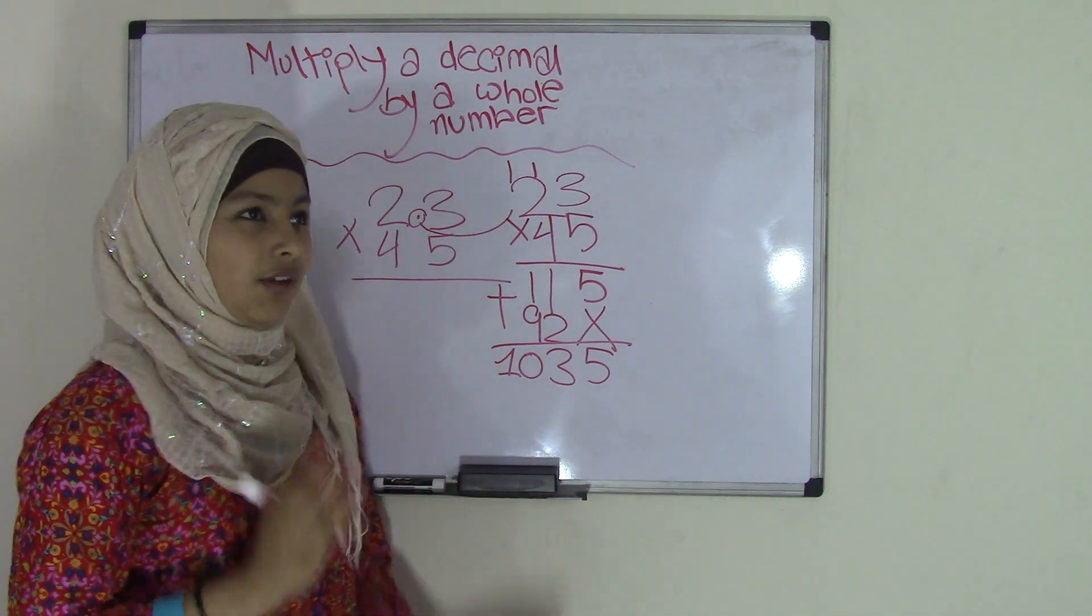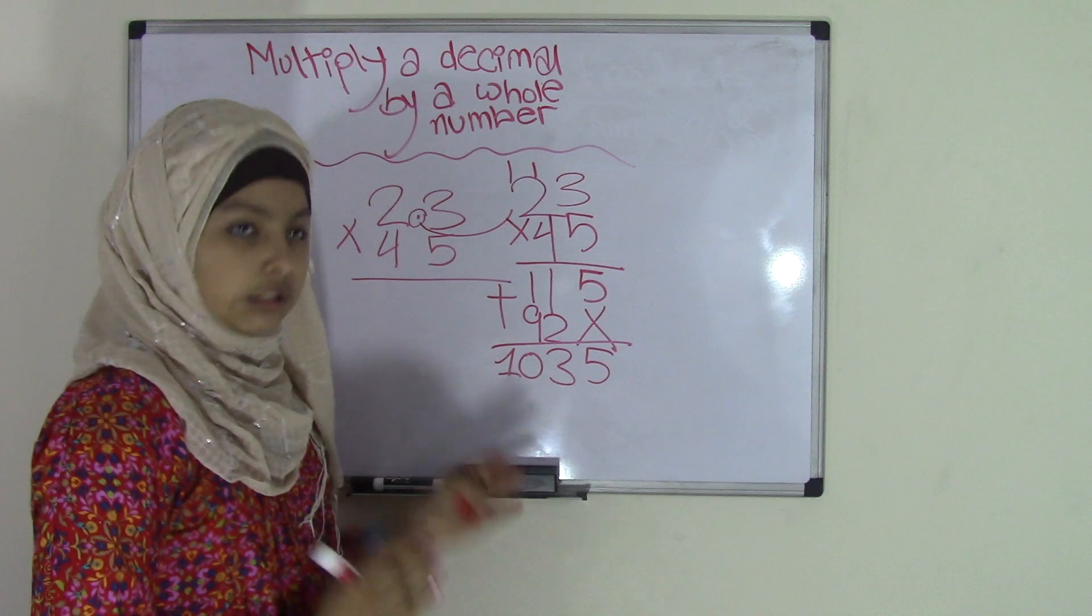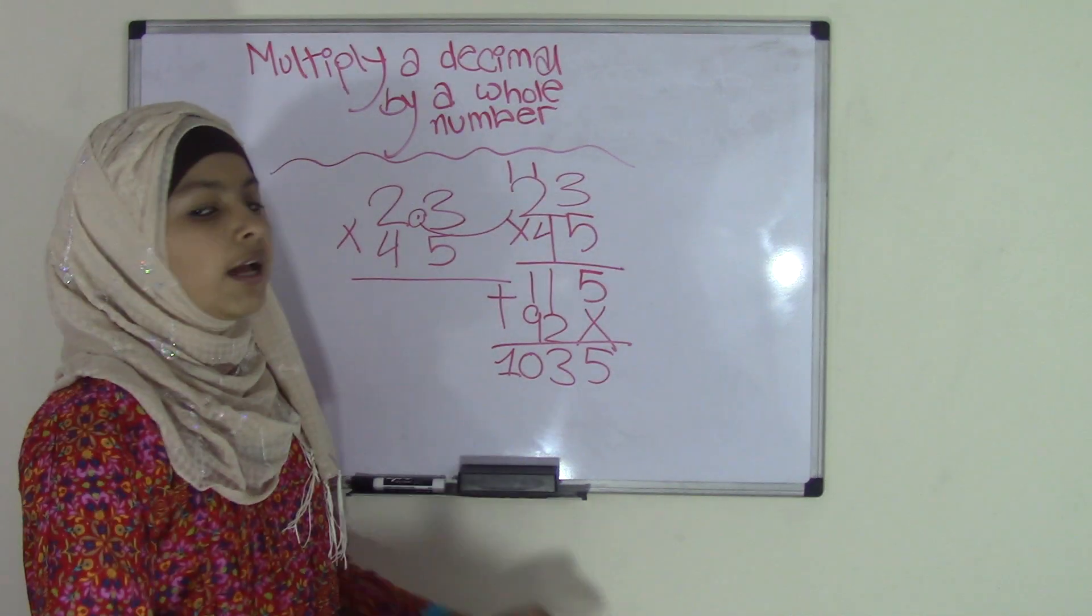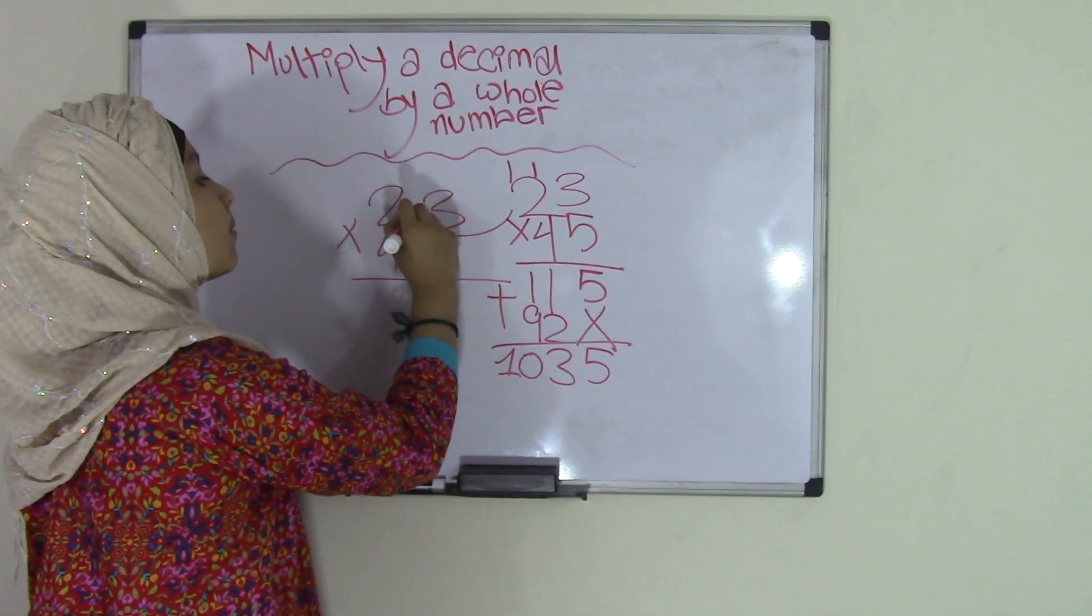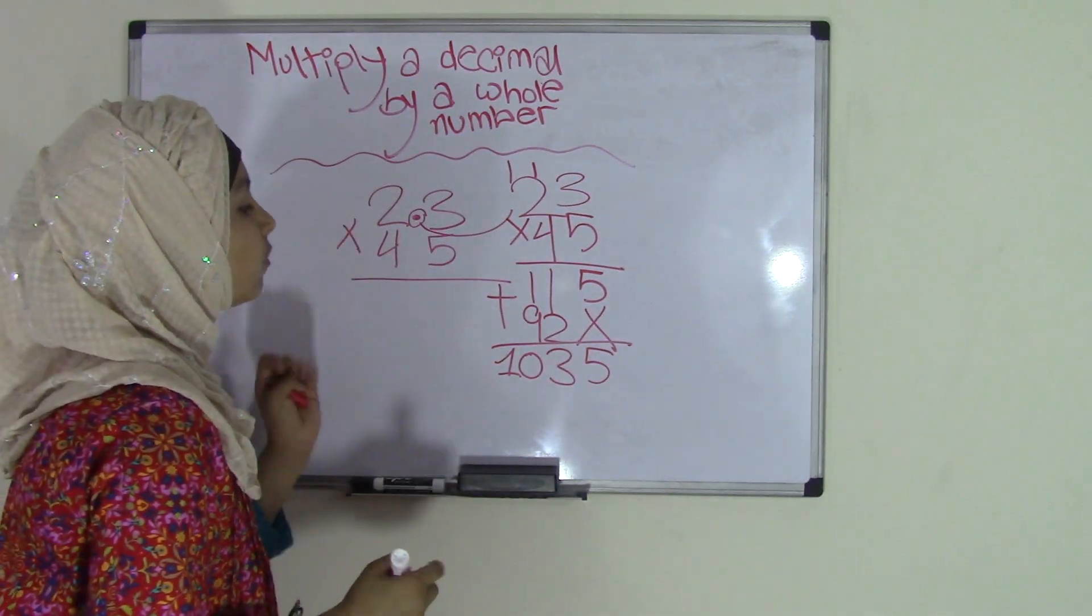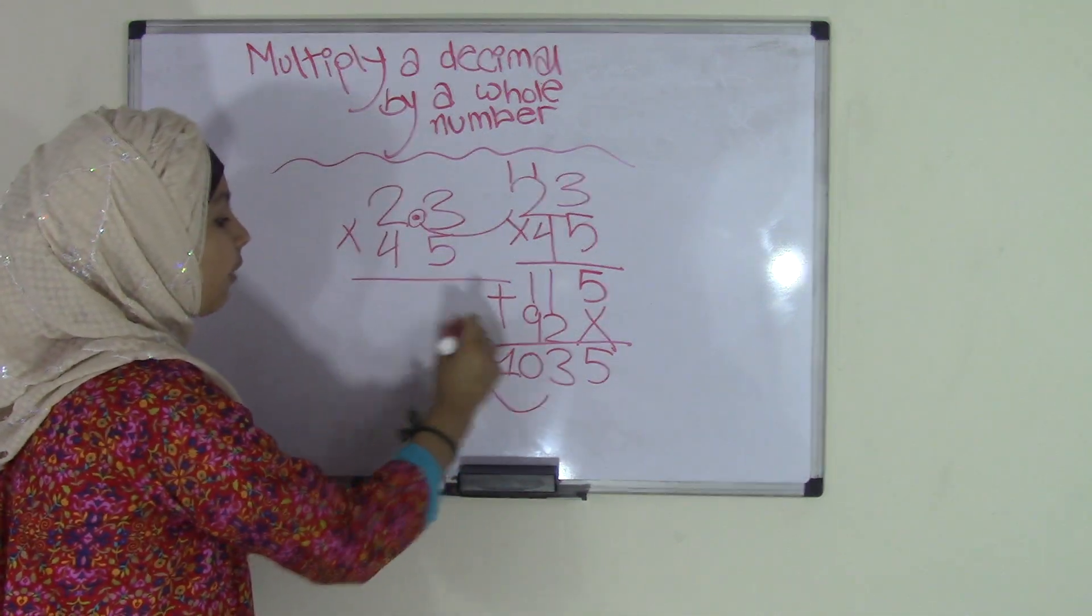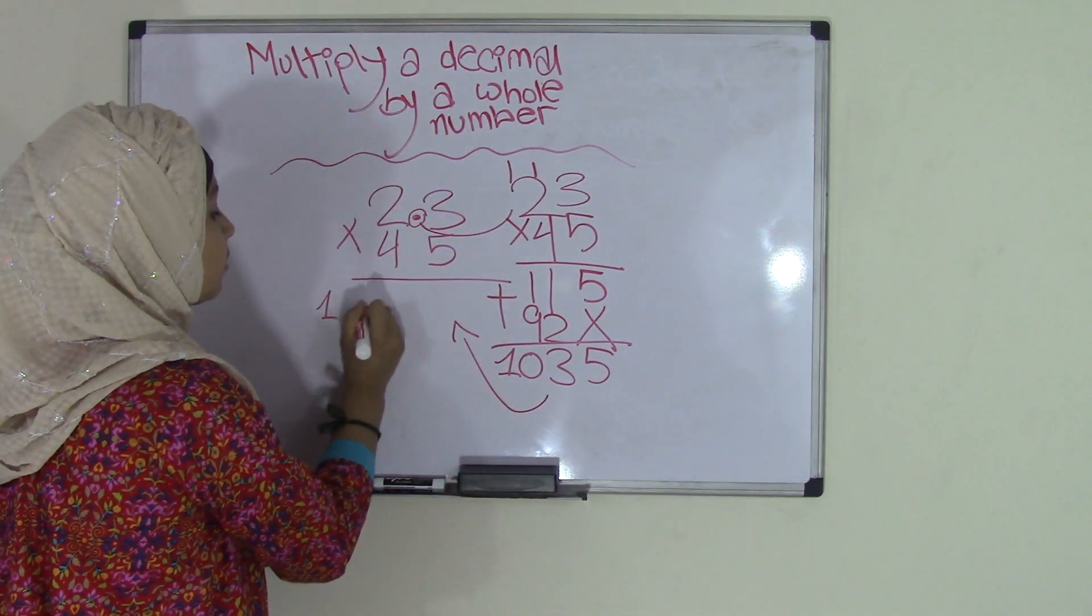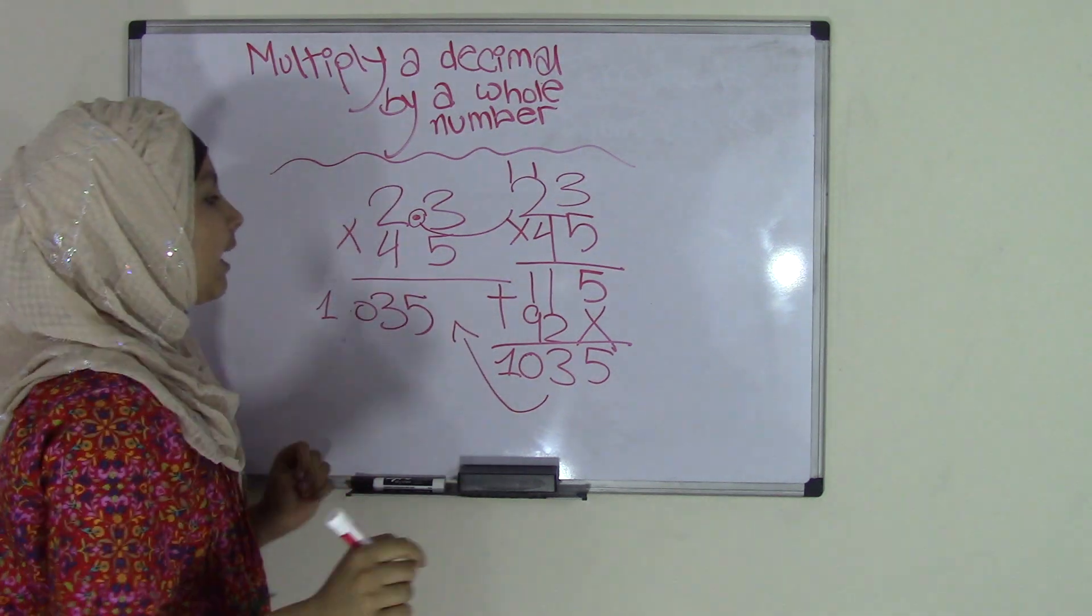Now, this is something really important that you have to remember. When you get your product, don't just leave it like that because that will be wrong. What you have to do now is come back to this and put the decimal point back. So, once again, you have 2.3 times 45. You take this product and shift it over here. So, it becomes 1035.